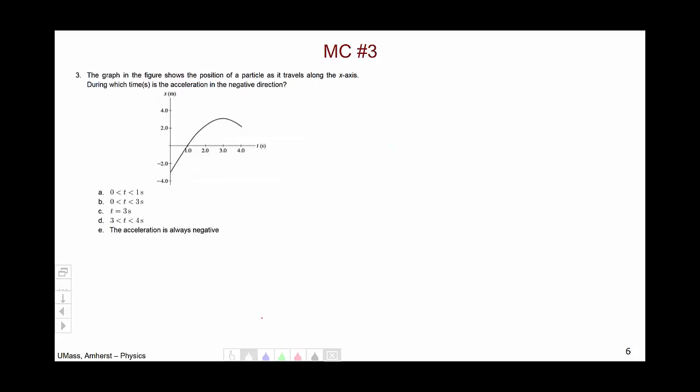Moving on to the third multiple choice question, where we had a graph showing position as it traveled along the x-axis. The question was: during which times is the acceleration in the negative direction? The correct answer was E, which could be discovered by trying to sketch out the acceleration graph.